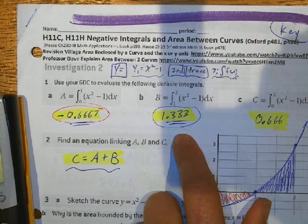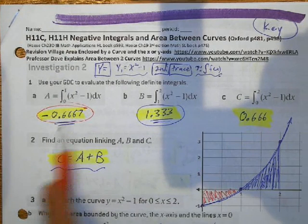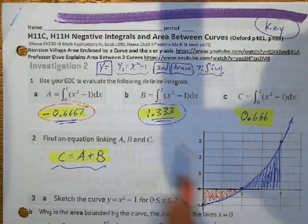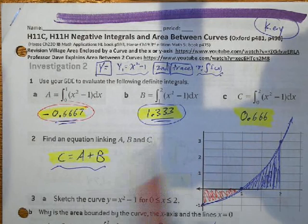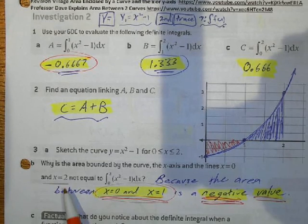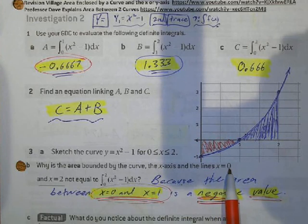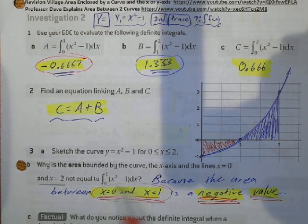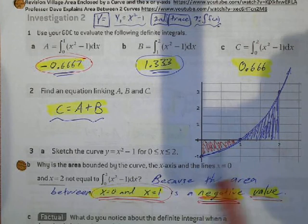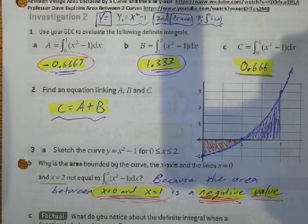Do the same process between 1 and 2, and between 0 and 2. The area below the curve comes out negative, while the area above the curve comes out positive on the calculator. If you do the area from here to here, it just adds the negative and the positive numbers together. Here's our sketch — the area between 0 and 1 comes out negative because the curve is below the x-axis.